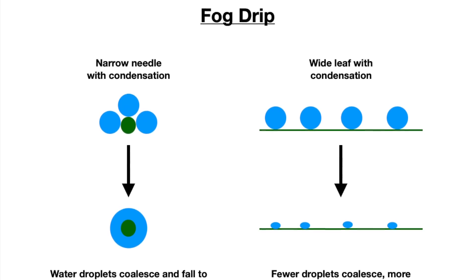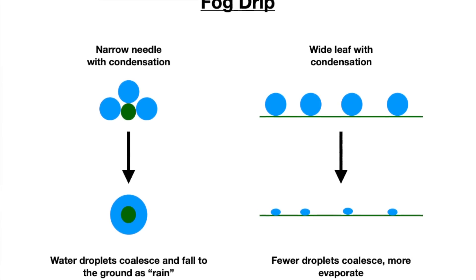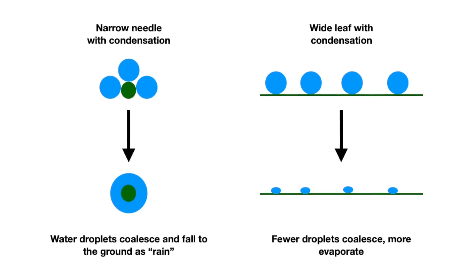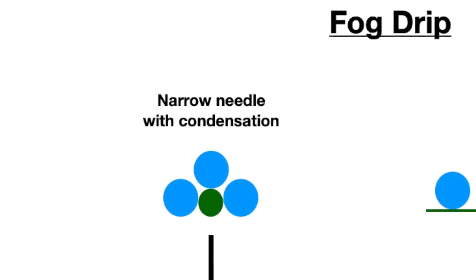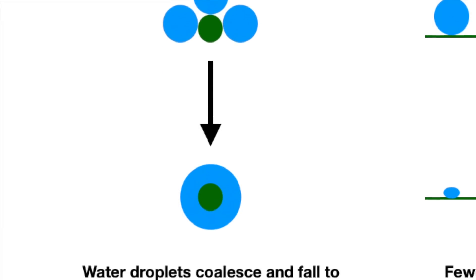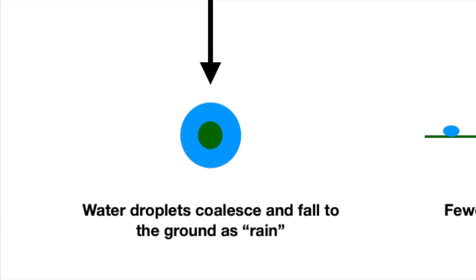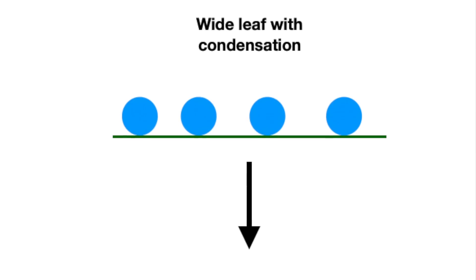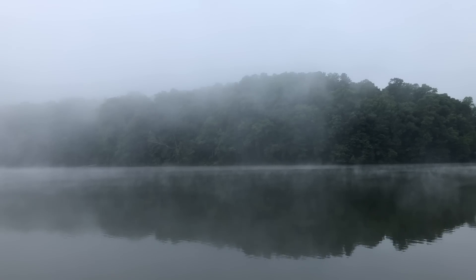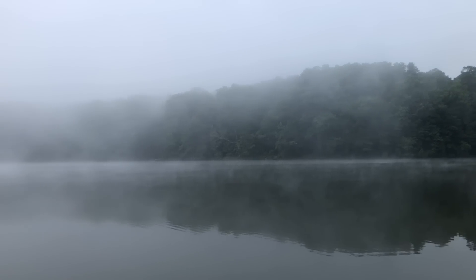Another interesting conifer advantage is found in foggy regions. Conifer needles act like perfect fog condensers, turning unusable water in the air into water that can be used for growth. When fog condenses on a conifer needle, the tiny water droplets are more likely to coalesce into a large water droplet which falls onto the forest floor and waters the tree. Fog that condenses on wide leaves, on the other hand, is more likely to remain in tiny droplets that evaporate. In general, thick advection fog occurs when true rainfall doesn't, making this advantage particularly strong in areas prone to advection fog, like the Pacific Northwest in summer or the shores of Lake Superior in spring.